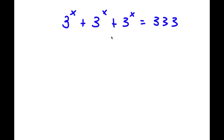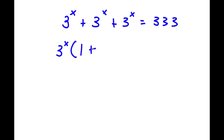In this problem, I have 3 to the power of x plus 3 to the power of x plus 3 to the power of x is equal to 333. To solve this, I'm going to factor out 3 to the power of x from the left-hand side. So I get 3 to the power of x times (1 plus 1 plus 1), which equals 333.